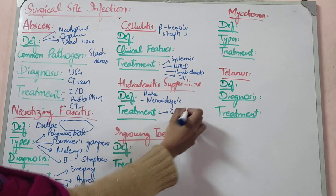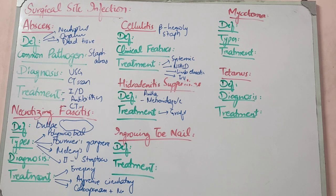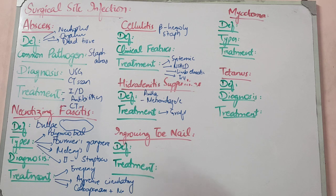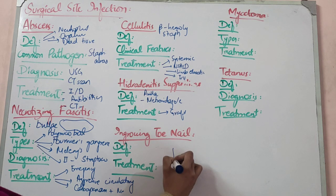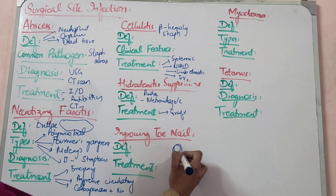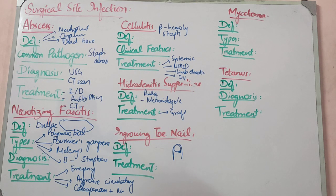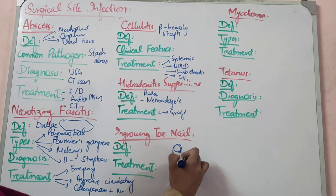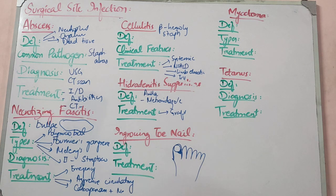After that, the ingrown toenail — onychocryptosis. This is when the big toenail starts growing into the soft tissue of the toe, affecting the lateral side. It penetrates the tissue causing pain and infection.